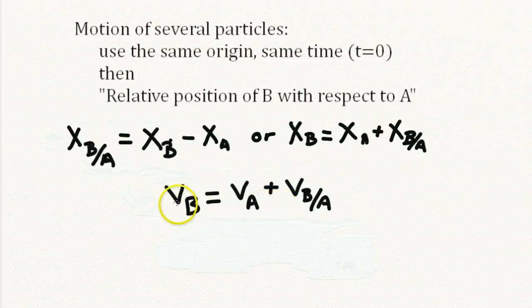Similarly, for the velocity, we could write that the velocity of B is equal to the velocity of A plus the velocity of B relative to A.